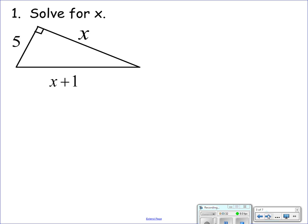So our first example, solve for X. So the hypotenuse squared, X plus one squared, X plus one squared is equal to the sum of the two legs squared. X squared plus five squared.